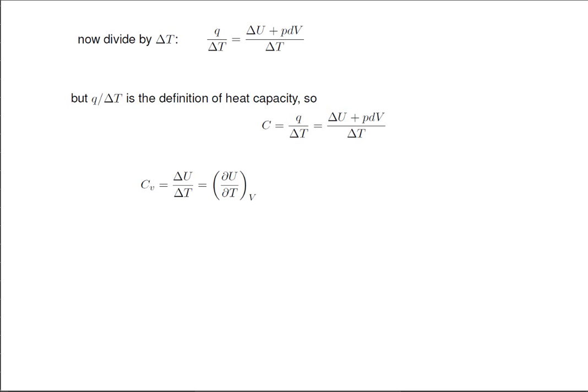Now consider constant volume, and we see that the PDV term goes away, leaving delta U over delta T, which I have rewritten with partial derivative notation. This is often considered to be a formal definition of heat capacity at constant volume.